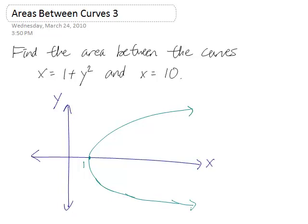If you have trouble graphing x equals 1 plus y squared, you could try graphing y equals 1 plus x squared and then flipping that over the line y equals x.